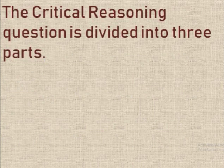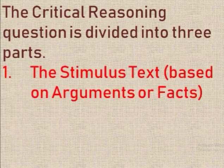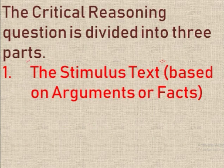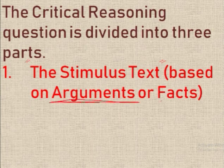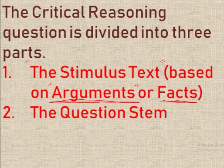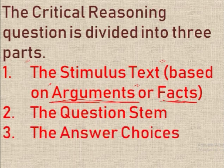The critical reasoning question is divided into three major parts. The first one is the stimulus text. This text is mostly based on some argument; it can also be based on some facts, but most of the problems are based on arguments. Then we have a question, and then we have five answer choices.